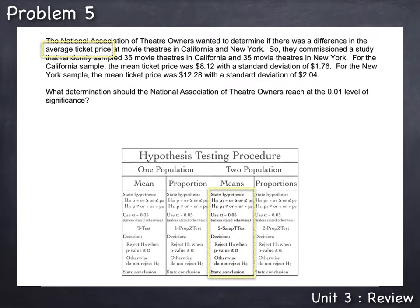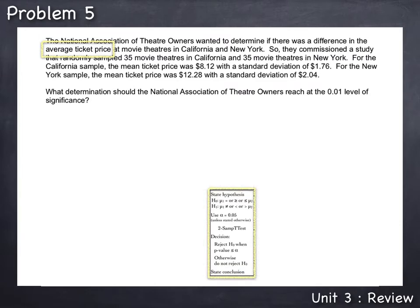We could use these steps in our hypothesis test procedure to help guide us through the process. The first step in any hypothesis test procedure is to state the hypotheses statistically. We start off writing the H0 and the H1. This is a test involving two population means, so our symbol for two population means would be mu1 first, mu2 second. We must determine if this is a test involving equal versus not-equal, or greater-than-or-equal versus less-than, or less-than-or-equal versus greater-than. The question determines which way we go. But first, we have to make sure we know which one is mu1, the first population mean, and which one is mu2, the second population mean.